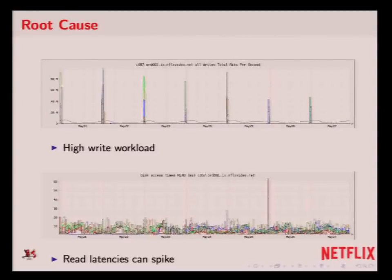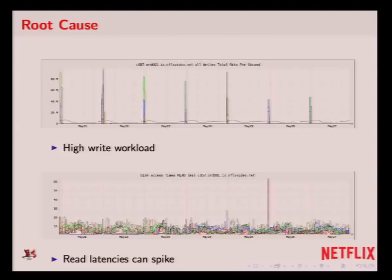Digging in some more, you'll see the top graph is a graph of the writes per second on each of the individual disks. They show big spikes — normally there's almost no load, and then big spikes. And here's where we caught one with a read spike here and a read spike here. That was the first clue that we were having some kind of problem that we needed to look into.